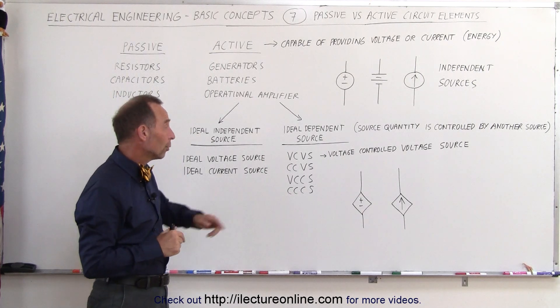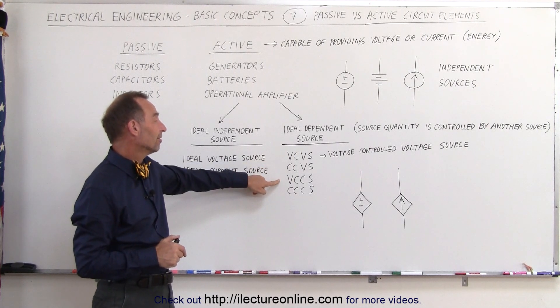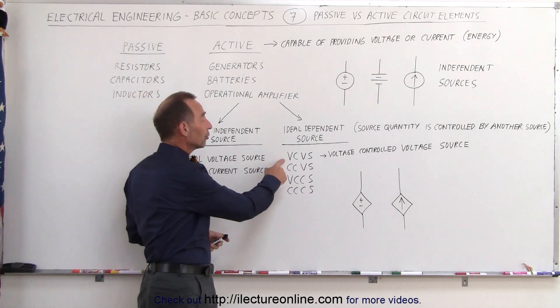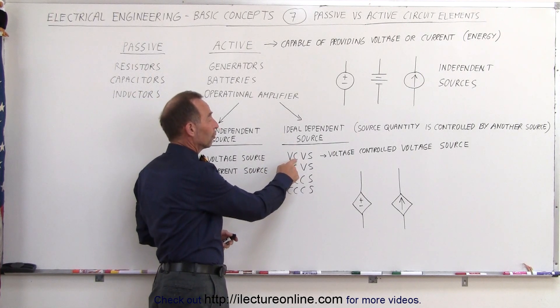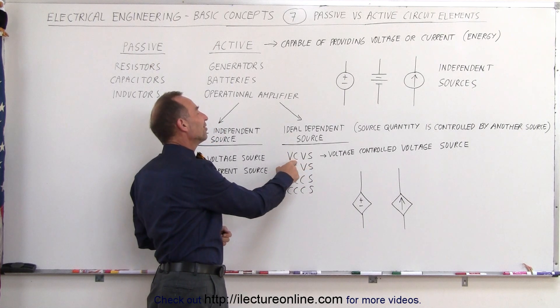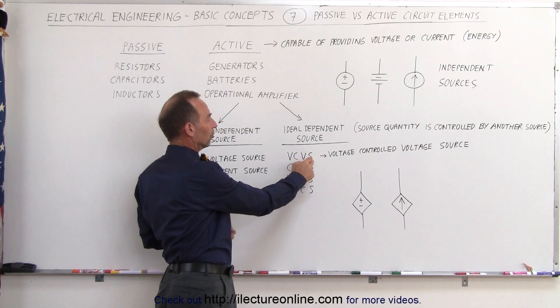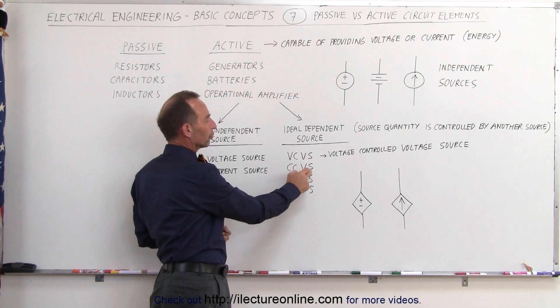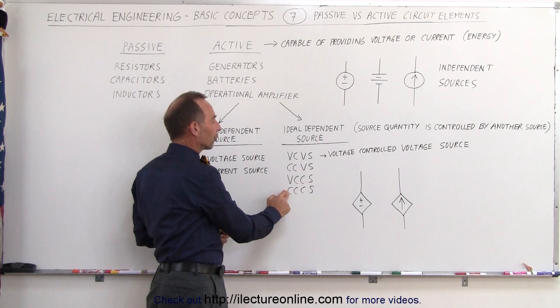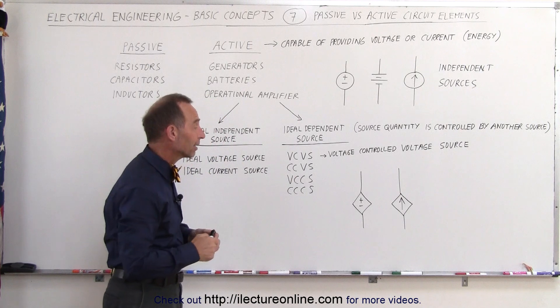There's four different kinds of those. We call them either the VCVS, the CCVS, the VCCS, or the CCCS. V stands for voltage and C stands for current. So we have voltage controlled voltage source, current controlled voltage source, voltage controlled current source, and current controlled current source. That's how we read those four acronyms.